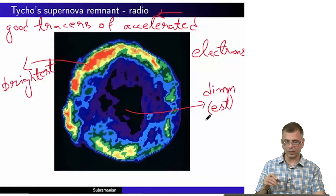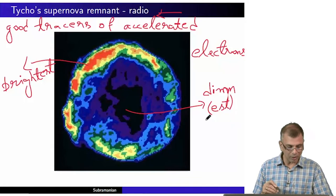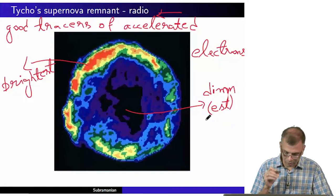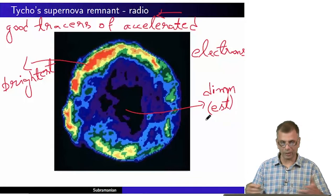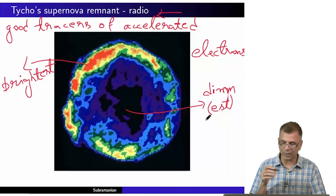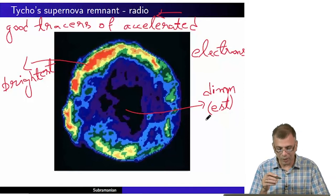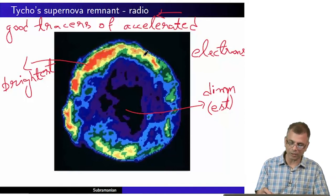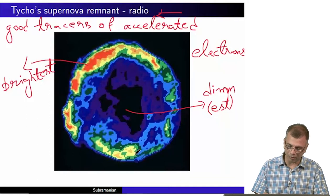What this picture is telling you — indirectly, of course — is that the largest concentration of accelerated electrons is to be found roughly on the rim.